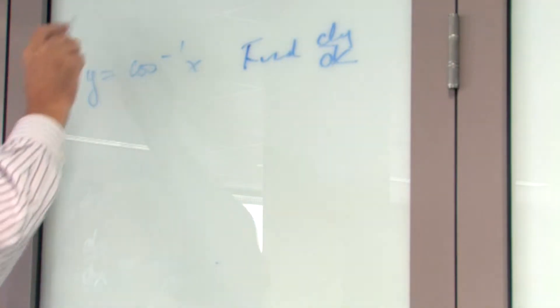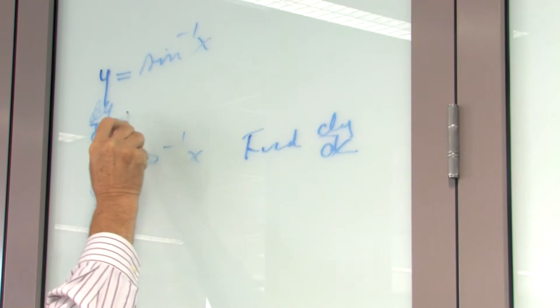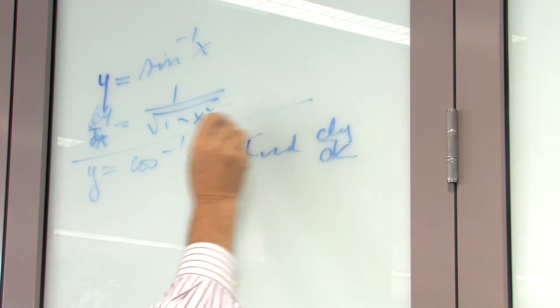Today we saw that the derivative of arcsin(x) with respect to x is 1 over the square root of 1 minus x squared. That was something we covered today.